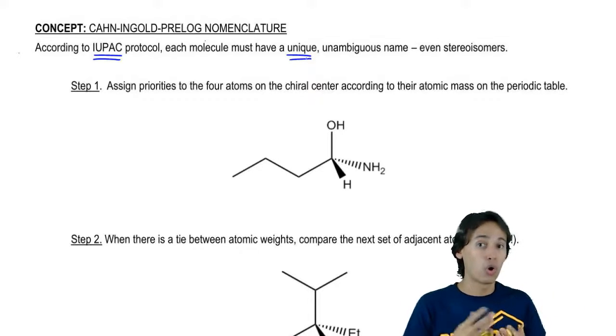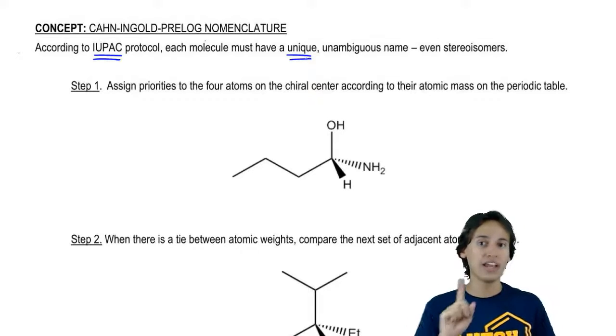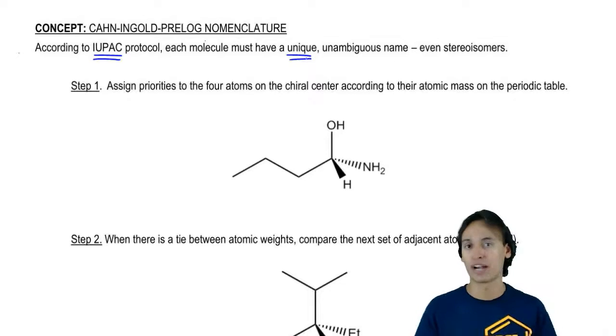It turns out that all we have to do is use the same IUPAC names from before, but we're going to add just one extra step to account for those chiral centers.